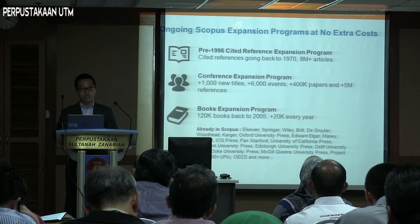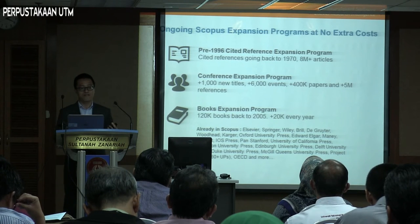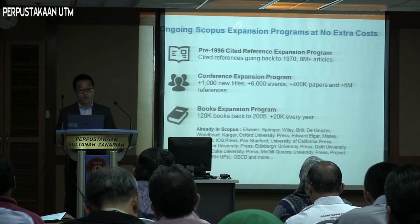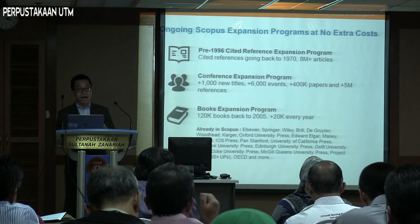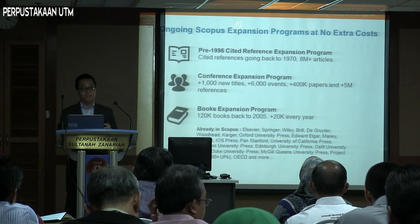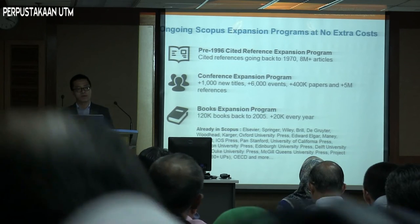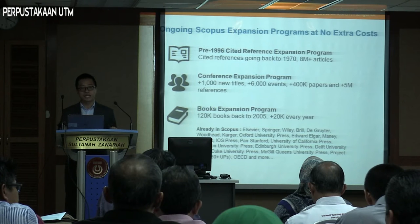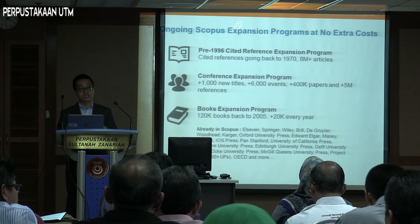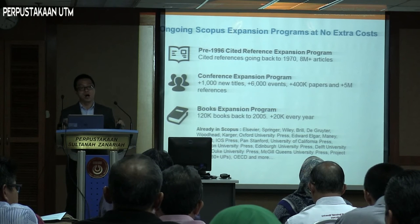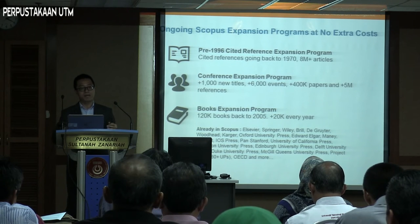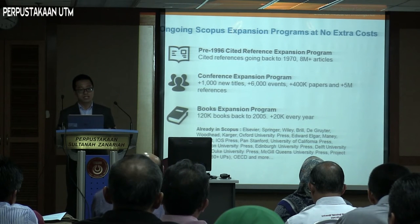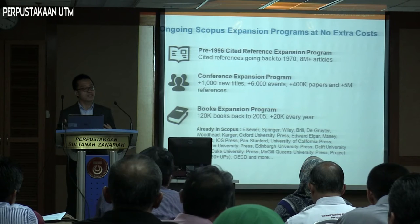These expansions mean that researchers will have a much more holistic and representative H-index. By expanding the reference program back to 1996 and beyond, we're not marginalizing researchers who have been in the field for a long time. Researchers who have been publishing since the 1970s can now have their records and H-index better represented on Scopus. Their body of work from 1970 onwards is now fully encapsulated, showing how effective a researcher they truly are.